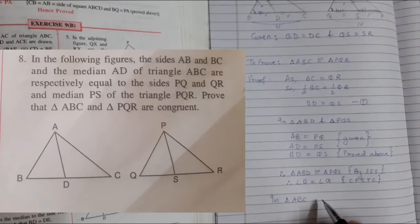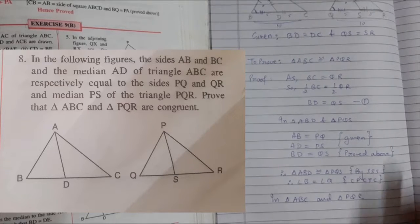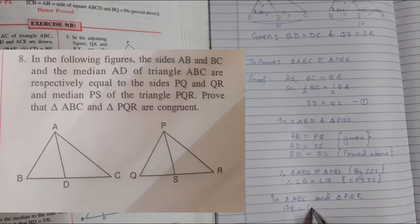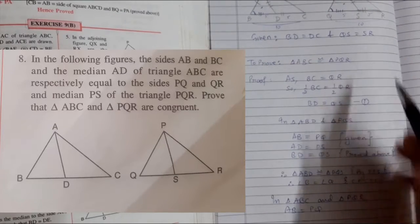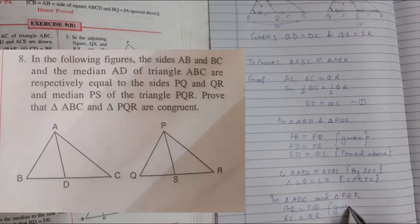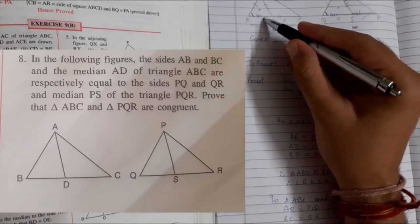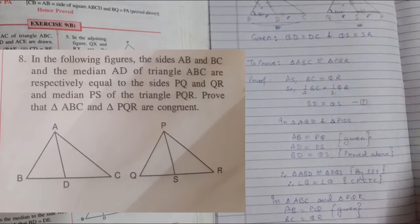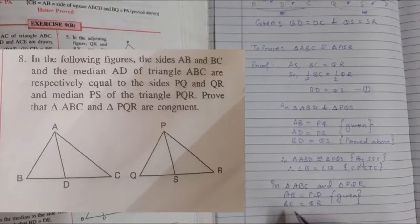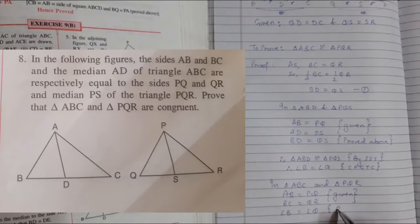In triangle ABC and triangle PQR: first, AB equals PQ; second, BC equals QR, both were given; third, angle B equals angle Q, which we proved above.